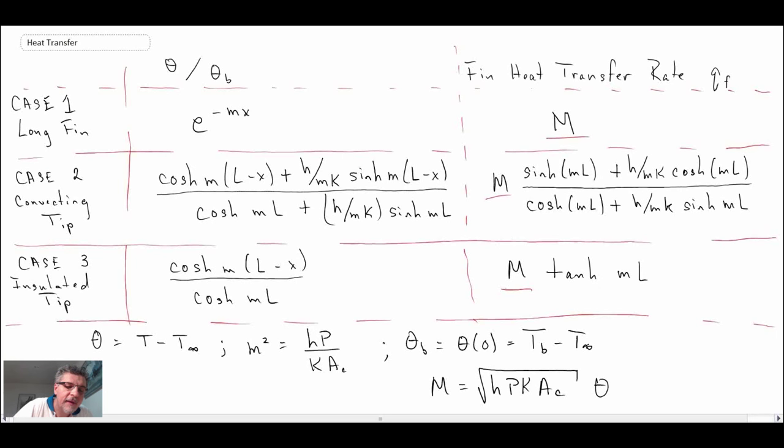This here on the left gives us the temperature profile in the fin, and this gives us the heat transfer that the fin is removing from the surface. When you look at these, the long fin case wasn't really a physically realistic application. The convecting tip was the one that was very accurate. But when you look at the mathematical expression, it's rather complex, although in a computer it's not a big deal. And then finally Case 3, the insulating tip one, that is a rather simple solution.